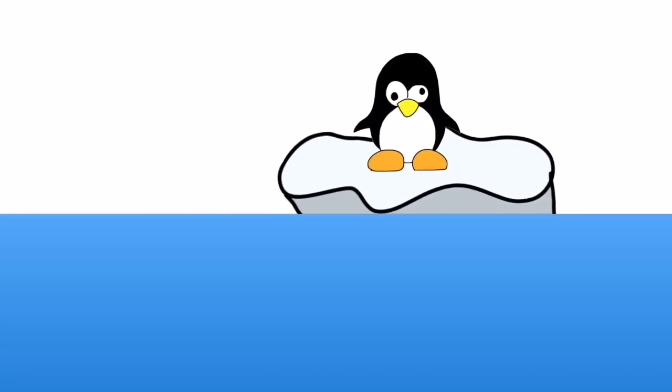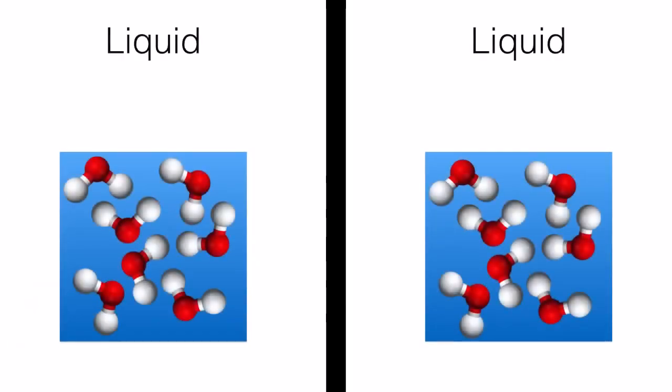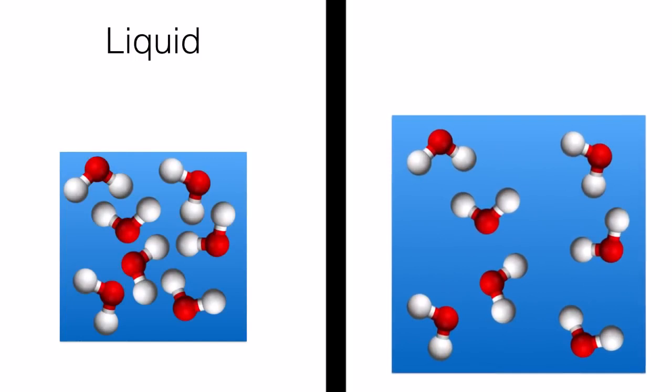Ice floats because of density. When water freezes, it expands. Just like the expanding air in the hot air balloon, water molecules in expanding ice spread further apart.